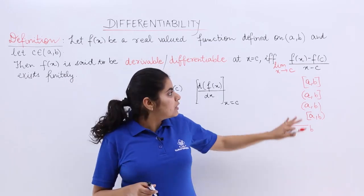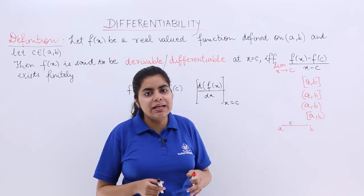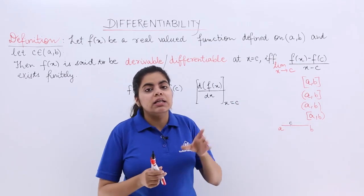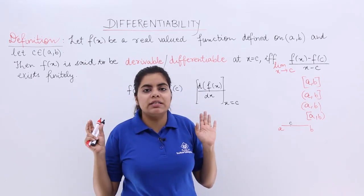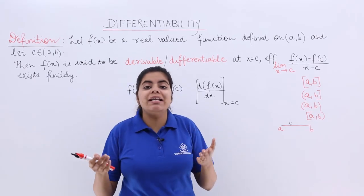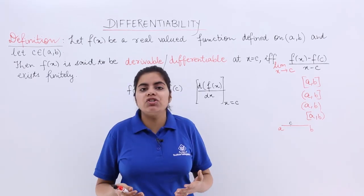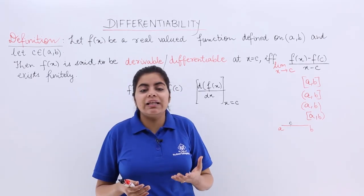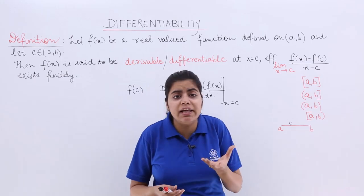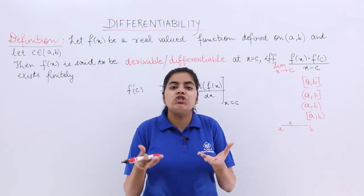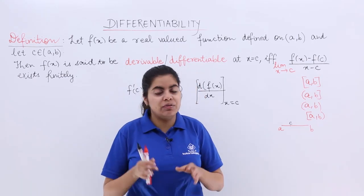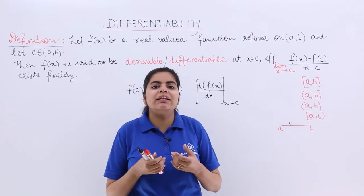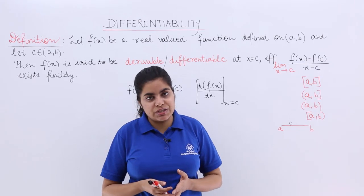Limit exists means the left hand limit should be equal to the right hand limit. In the case of differentiability, we say the left hand derivative should be equal to the right hand derivative. Then we say that the limit exists.